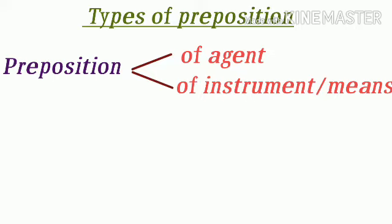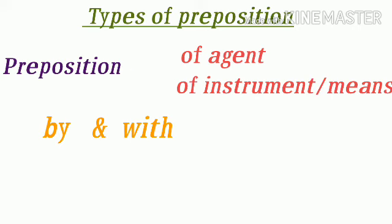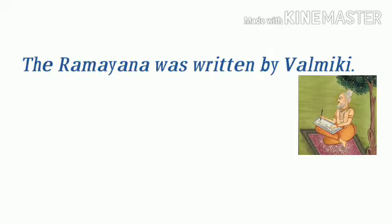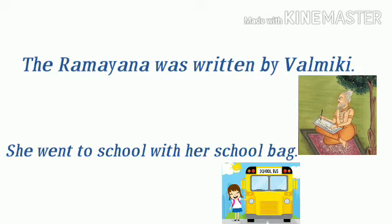Next है preposition of agent और preposition of instrument or means. Preposition of agent का मतलब है कि वो कार्य जो subject के लिए किसी और व्यक्ति ने किया है, उसे preposition of agent कहते हैं। Preposition of instrument मतलब साधन — जिस साधन या tool से कार्य किया गया। इसके लिए दो preposition यूज़ होते हैं: 'by' और 'with'। जैसे: The Ramayana was written by Valmiki — रामायण Valmiki जी के द्वारा लिखी गई थी। And: She went to school with her school bag — वह अपनी school bag के साथ school गई।